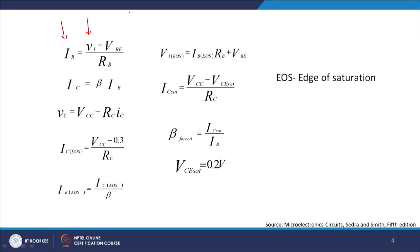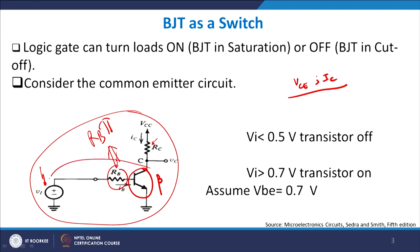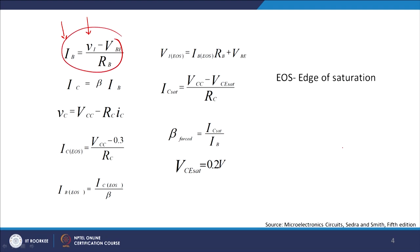The base current IB = (VI − VBE) / RB, where VI is the input voltage. Then IC = β × IB, and the collector voltage VC = VCC − IC×RC. The saturated collector current ICSAT = (VCC − VCESAT) / RC. From the voltage transfer characteristics, VCESAT is approximately 0.2 to 0.3 volts, and the edge of saturation gives IC_SAT ≈ (VCC − 0.3) / RC.